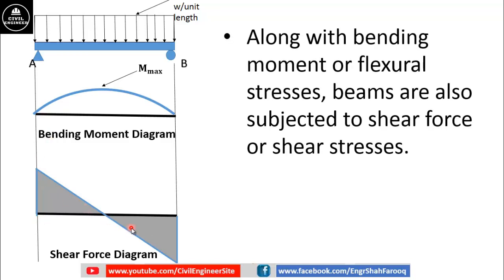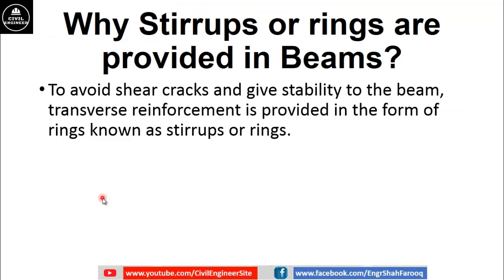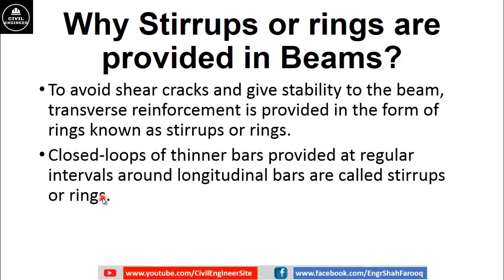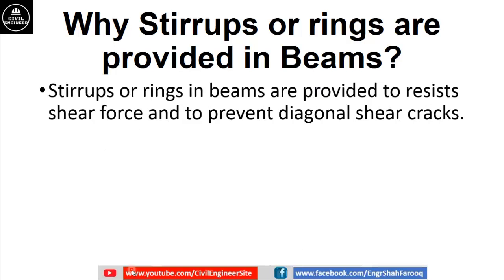As discussed, along with bending moment or flexural stresses, beams are also subjected to shear force. This shear force or shear stresses will cause diagonal shear cracks in beams. To resist shear force and avoid shear cracks and give stability to the beam, transverse reinforcement is provided in the form of rings known as stirrups. Stirrups are closed loops of thinner bars provided at regular intervals around longitudinal bars, and are called transverse reinforcement or shear reinforcement. It can be concluded that stirrups or rings in beams are provided to resist shear force and to prevent diagonal shear cracks at supports.